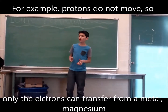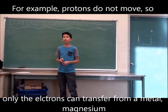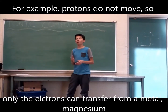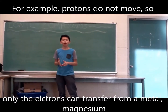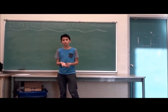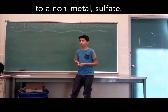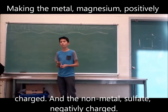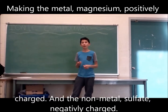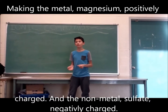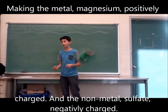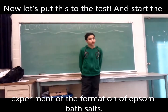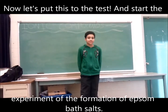For example, protons do not move, so only the electrons can transfer from a metal — magnesium — to a nonmetal — sulfate — making the metal, magnesium, positively charged, and the nonmetal, sulfate, negatively charged. Now let's go to the lab and start the experiment on the formation of Epsom salts.